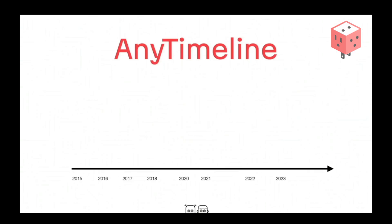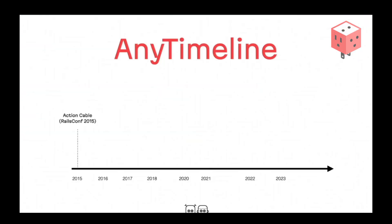Before we start discussing the release, the features, and the future, I'd like to talk a bit about the AnyCable timeline — how we got here. We're starting from 2015, but technically it's not part of AnyCable's story. That's when Action Cable was announced at RailsConf in Atlanta 2015, and introduced in Rails 5.0.